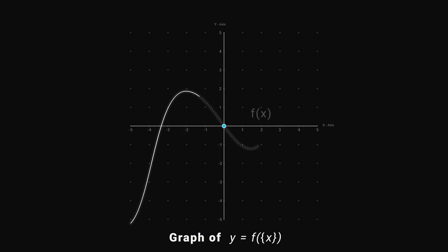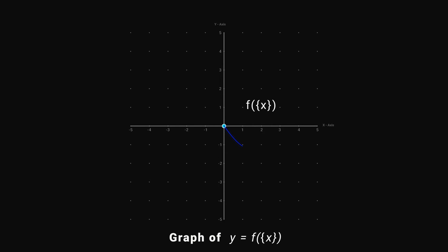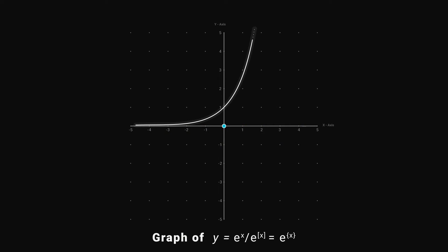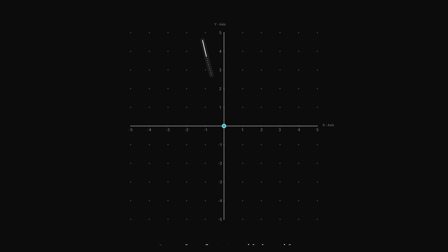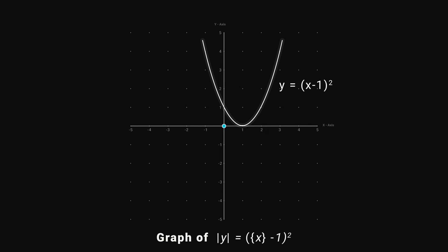To draw the graph of this function, first draw f(x) and then select the portion of f(x) found between y = 0 and y = 1, then repeat it for all the remaining points. Let's take another example: modulus of y equals this. Draw y and select the graph between y = 0 and y = 1, then repeat it for all the remaining points.